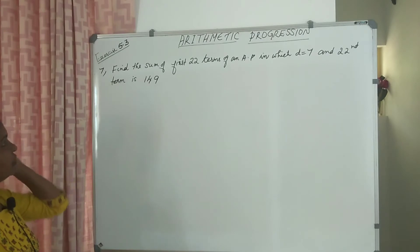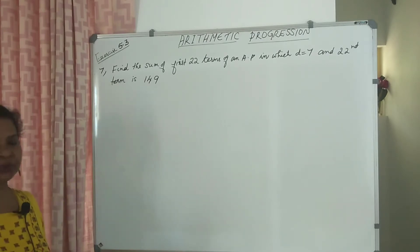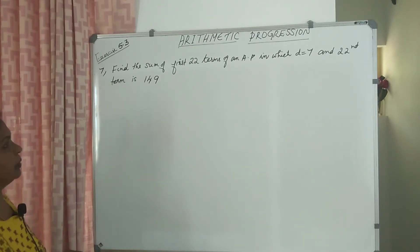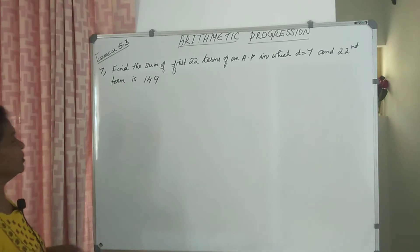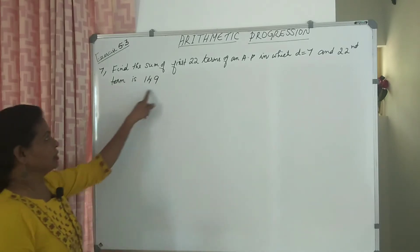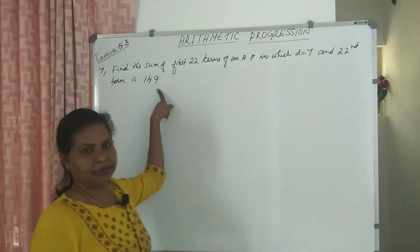Find the sum of first 22 terms of an AP in which D is 7 and its 22nd term is 149.